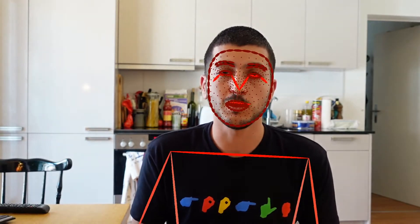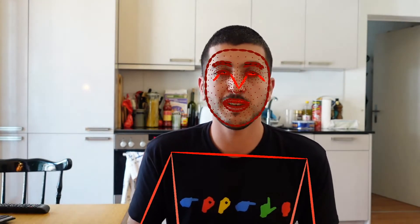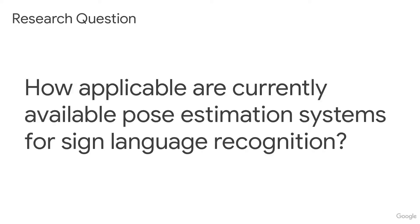The recording of accurate human skeletal poses is difficult and often intrusive, requiring signers to wear specialized and expensive motion capture hardware. Fortunately, advances in computer vision now allow us to estimate these poses directly from videos. However, we currently do not understand their suitability for use in processing sign language, both in recognition and production, and therefore we ask: how applicable are currently available pose estimation systems for sign language recognition?